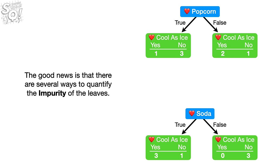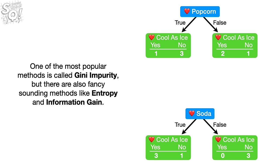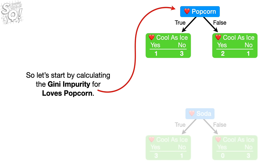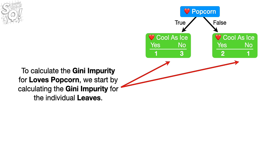It would be nice if we could quantify the differences between Loves Popcorn and Loves Soda. There are several ways to quantify the impurity of the leaves. One of the most popular methods is called Gini impurity, but there are also fancy-sounding methods like entropy and information gain. However, numerically the methods are all quite similar, so we will focus on Gini impurity, since it is very popular and I think it is the most straightforward.